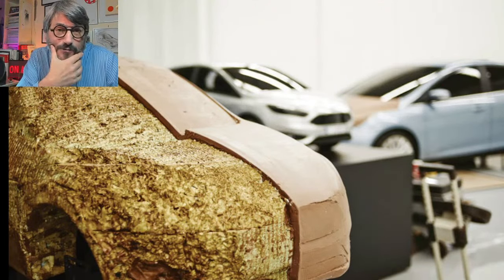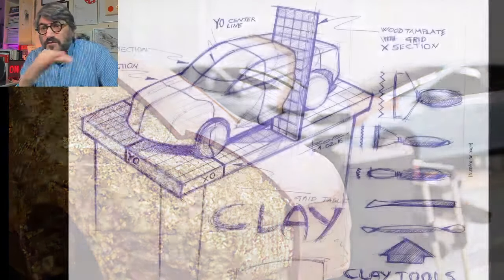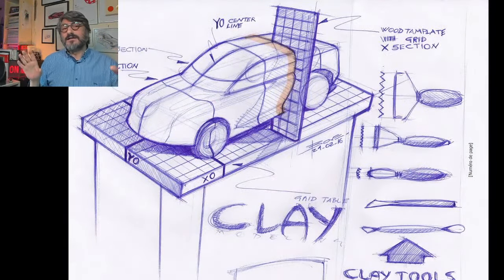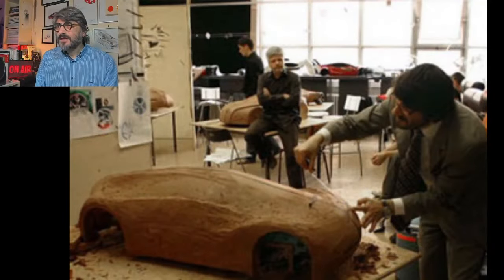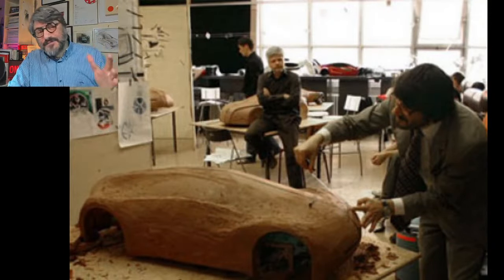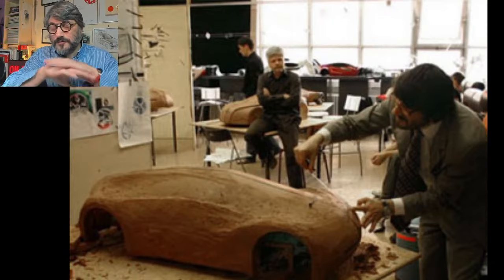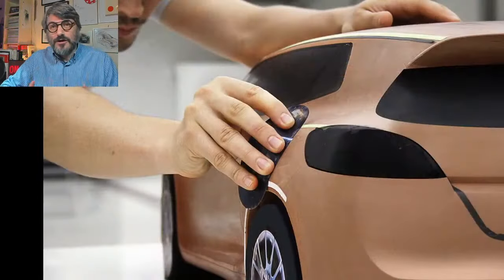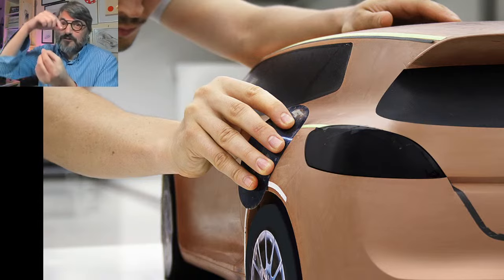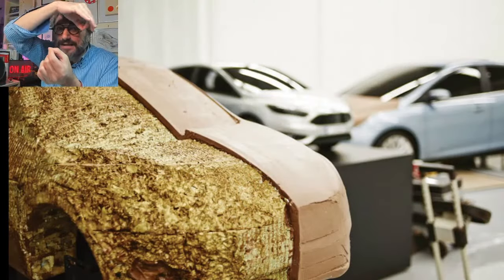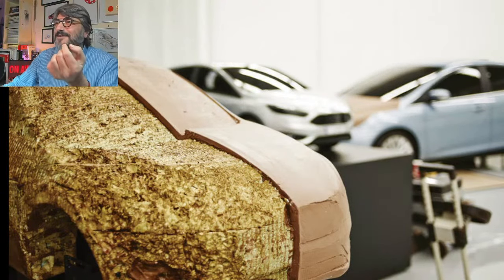The milling process takes around 10 to 15 hours, so in 15 hours you have the whole car done — or half the time if you do only a half model. When you do the half or full model, you have your surfaces milled out, but the quality will not be good because there will be all the signs of the milling points on the surface.